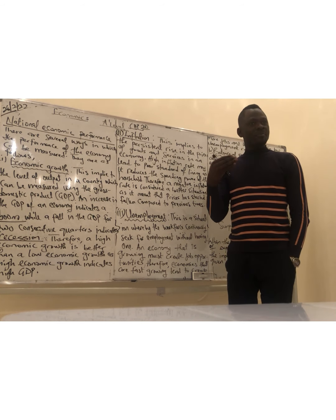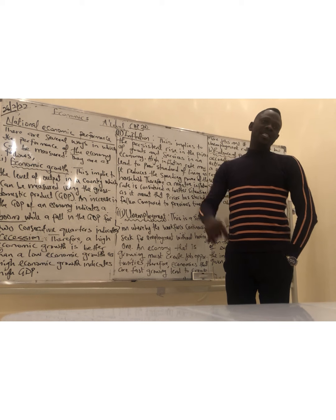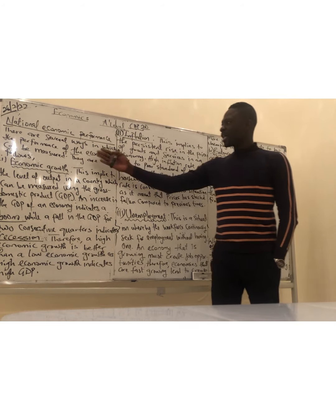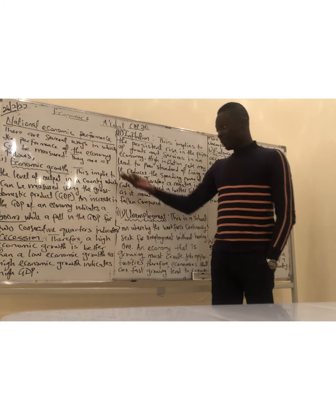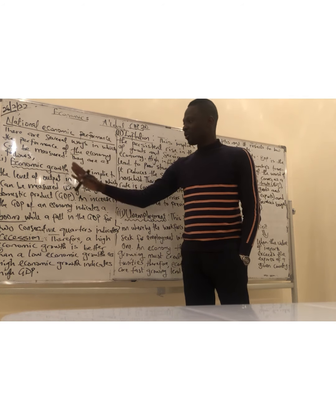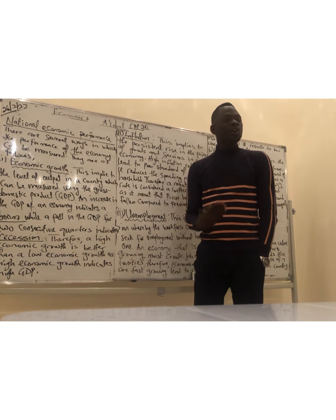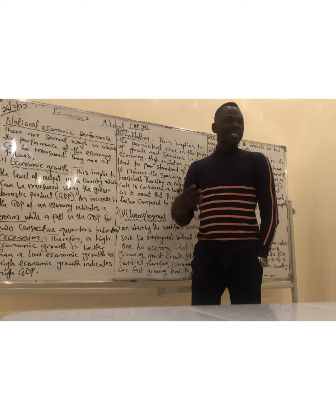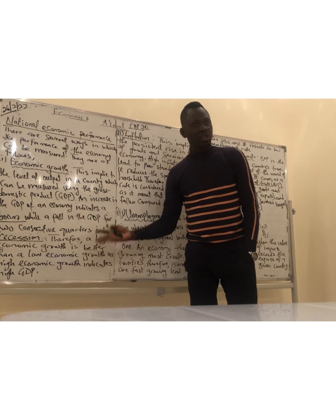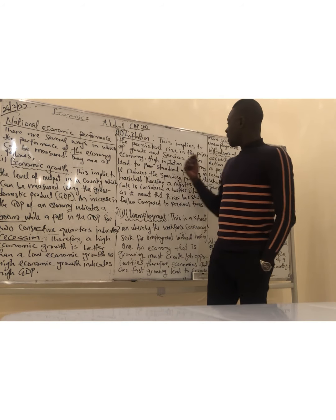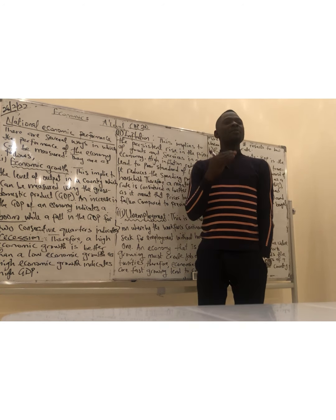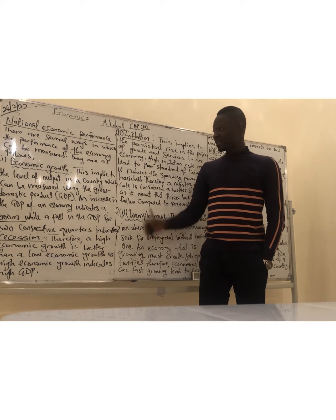With the help of macroeconomics, we are able to judge the performance of the economy through national economic performance. There are several ways in which the performance of the economy can be measured based on certain criteria: economic growth, inflation, unemployment, and balance of payments. These are the ways in which we can judge the performance of an economy. Let's start one at a time — let's talk about economic growth.